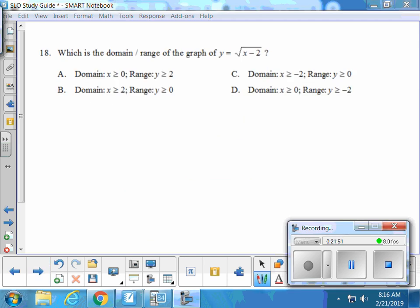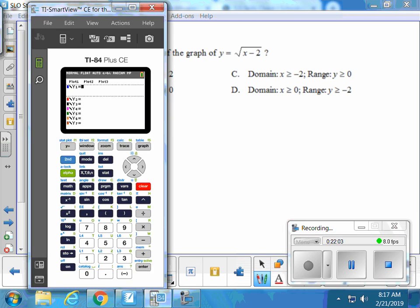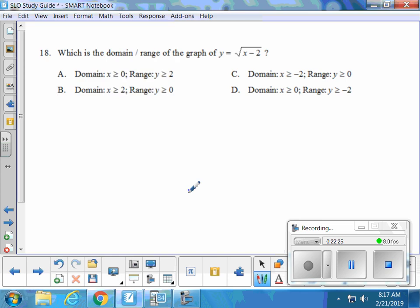So domain and range. We always do things like negative infinity to infinity and 2 to infinity. But they're writing it different. Let's graph it and see what it looks like. Square root of X minus 2. Where does it look like this is going on the X-axis? From 2 to infinity. And on the Y-axis for range? From 0 on up. So which one says that on the X-axis it goes from 2 up and on the Y-axis it goes from 0 up? Very good. So even though they didn't write it like we write it, we still figured it out.